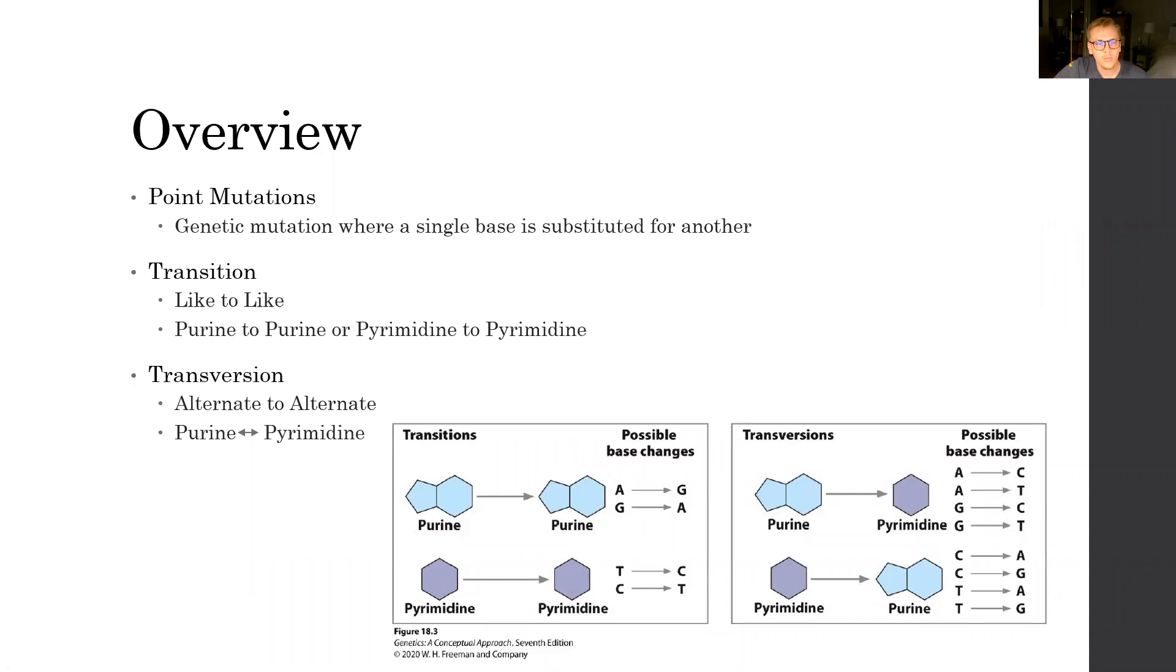So with point mutations in its simplest form, these are genetic mutations where a single base is substituted for another. This can manifest in one of two ways. They can either be transitions, where we have a like-to-like substitution, that is to say a purine to purine or a pyrimidine to a pyrimidine,